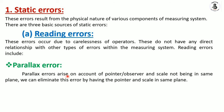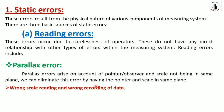A common type of reading error is parallax error. Parallax error arises when the pointer or scale and the observer are not in the same plane — there is some angle between them. This error can be eliminated by having the pointer and the scale in the same plane, at right angles. Wrong scale reading and wrong reading of data by the observer are also forms of parallax error.